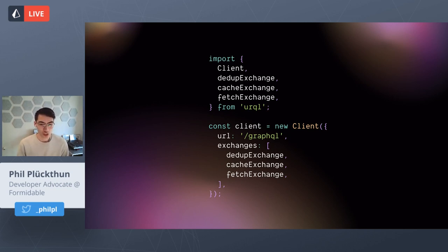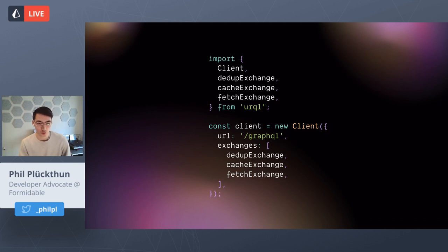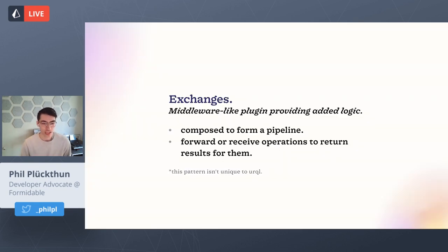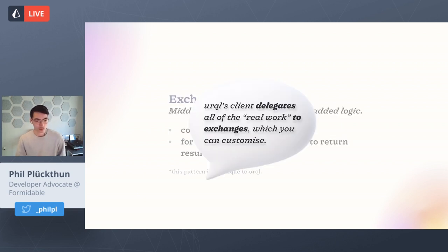Instantiating a client is pretty simple — we have a URL, and exchanges are optional. Here we're passing in three exchanges that define the default behavior: deduplication, caching, and fetching — with fetching being the last one that makes the actual request to the GraphQL API. That brings us to our plugin system, exchanges, and the sensibility part of Urkel. Urkel's client just delegates all the real work to exchanges.